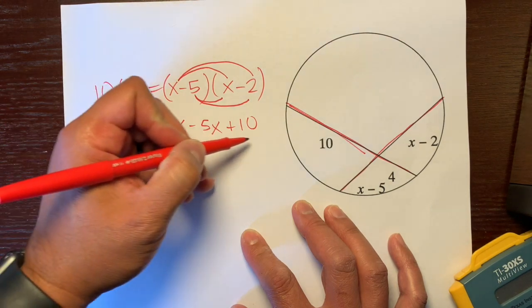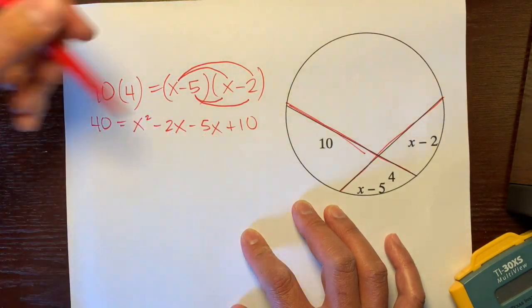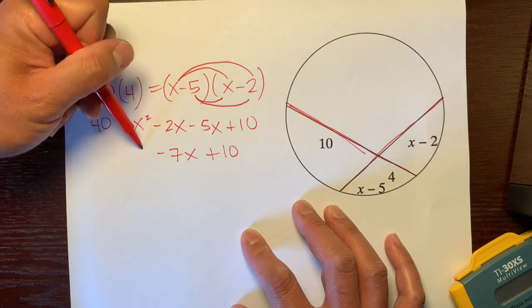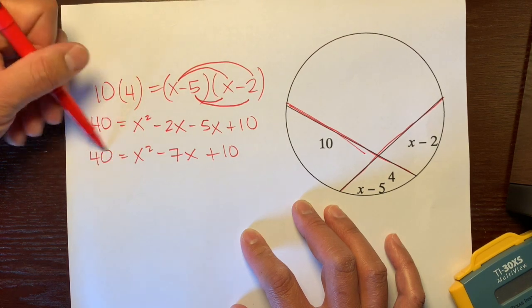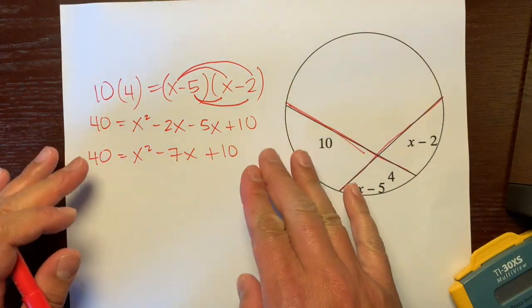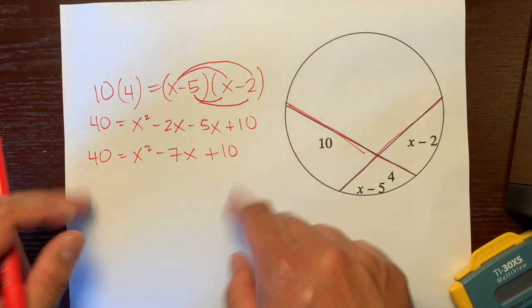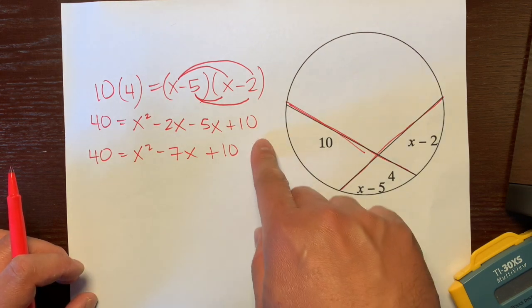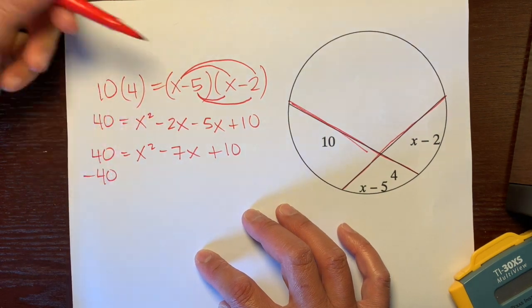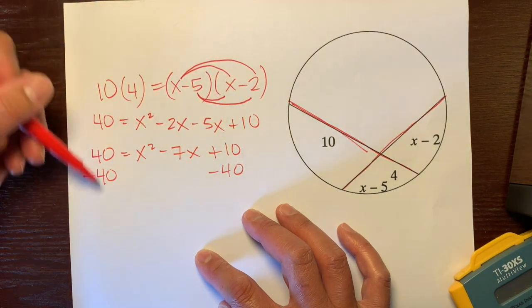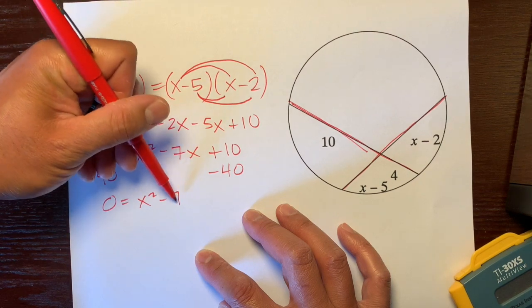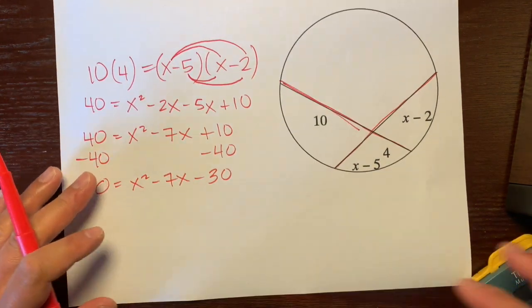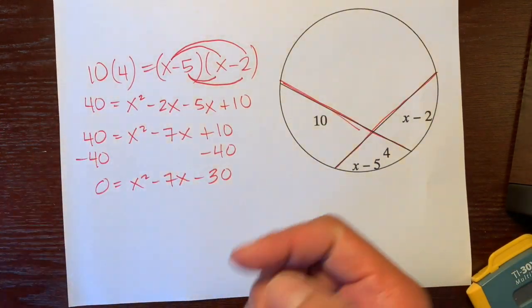Let's look at this side. Can we combine any like terms? Yeah, we combine these two terms. Negative 2x minus 5x is negative 7x. Bring down that 10. Bring down that x squared and bring down that 40. So now we have all this algebra goodness. We want to make this entire equation equal to 0. How do we make that equal to 0? Well, the easiest way to get rid of this 40 is bring it to the other side. So subtract it here and here. And 40 minus 40 is 0 equals x squared minus 7x. And 10 minus 40 is negative 30.